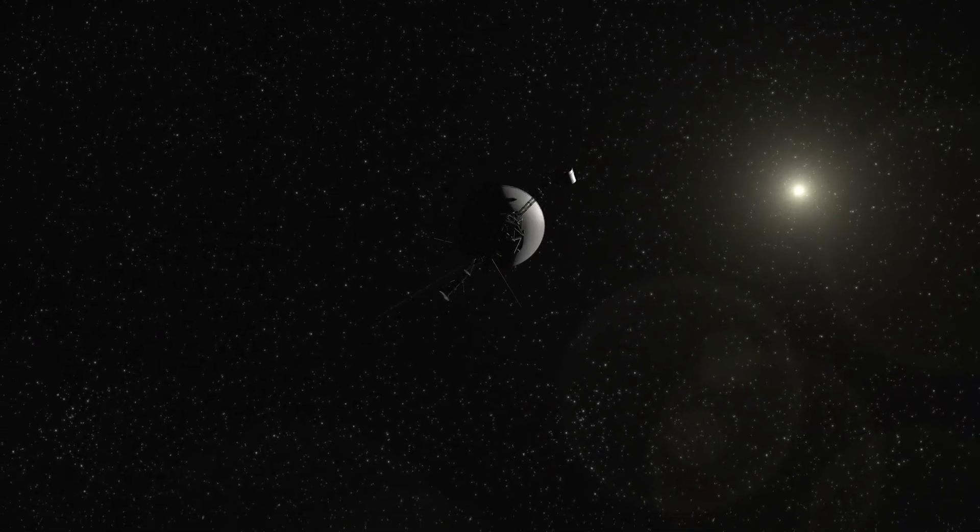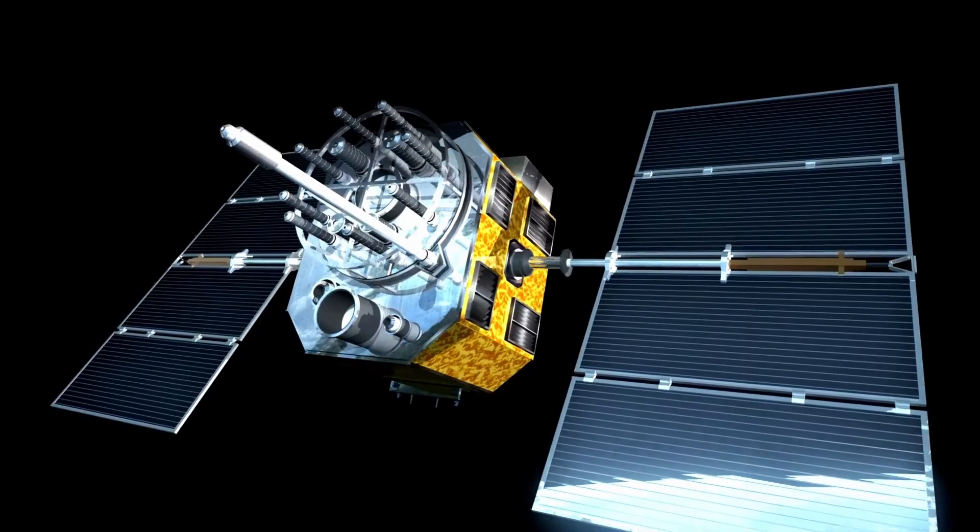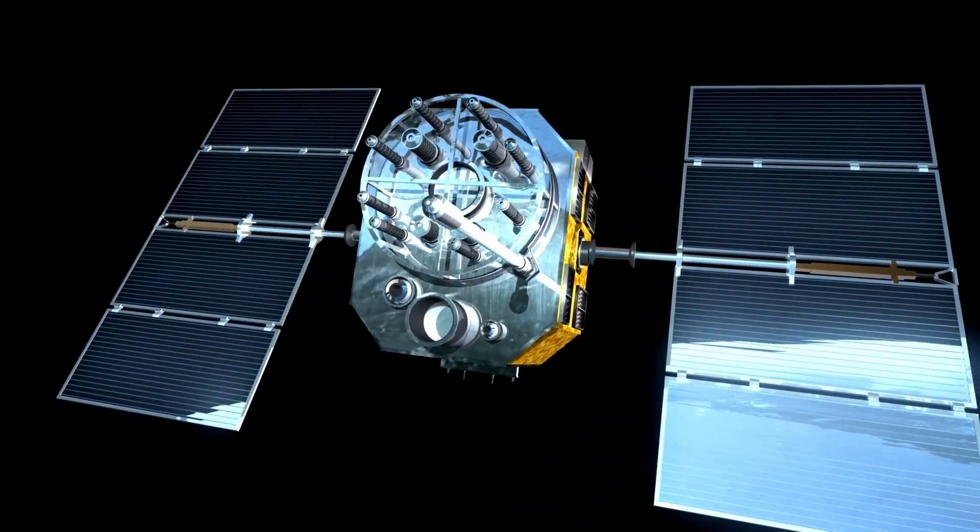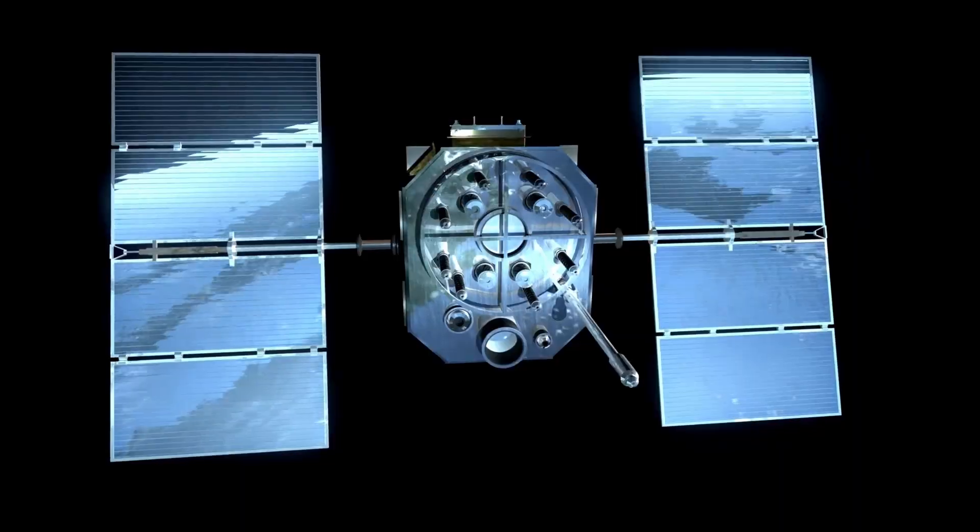In 1977, NASA launched a spacecraft, Voyager 1 and Voyager 2, on an unprecedented mission to explore the farthest reaches of our solar system and beyond.